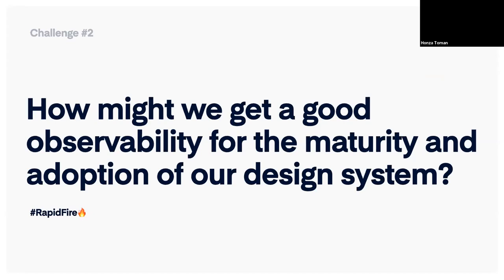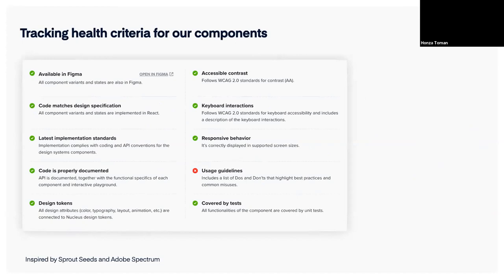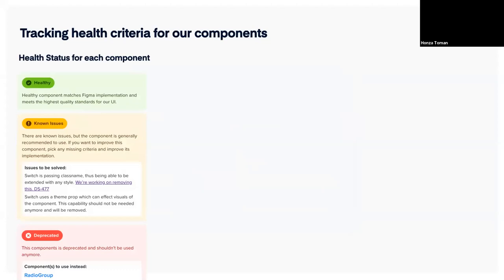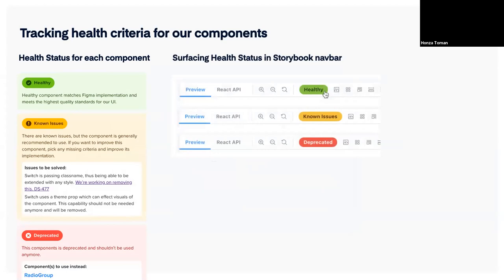The second challenge is: how might we get good observability for the maturity and adoption of our design system? For each component in our design system, we track health criteria. We defined 10 different criteria that help us understand — and help everyone understand — what we consider a high-quality component. This was inspired by Sprout Seeds and Adobe Spectrum, which also have checklists and health criteria. We have a badge or health status for each component visible in Storybook. We now even surface this health status to the Storybook header, so every time someone opens a component, they can see its quality level.